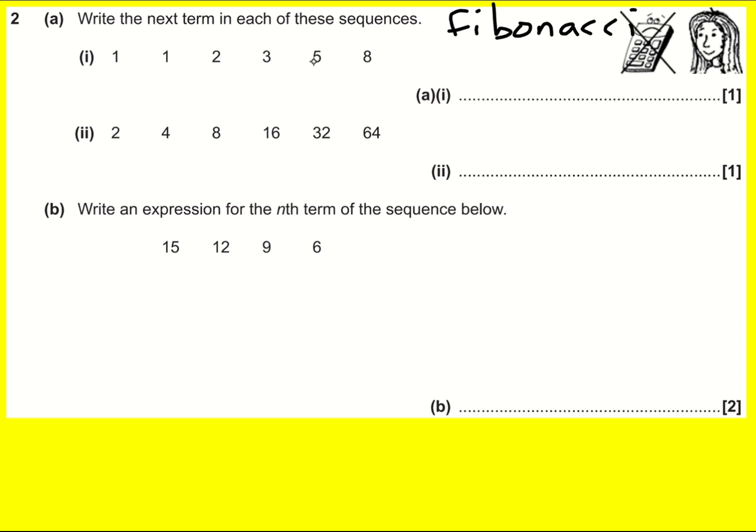Basically, to get the next number, you add the previous two. In this case, we're going to do five plus eight, and the answer is going to be 13.